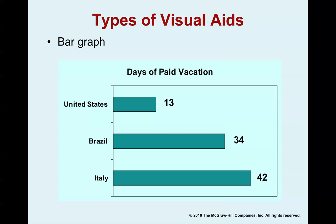Bar graphs are another type. This bar graph shows the number of paid vacation days in different countries. In the United States, people get about 13 days of paid vacation. Brazil gives 34 paid vacation days. Italy offers 42 days of paid vacation, which is pretty incredible. You can represent comparative information like this effectively in bar graphs.